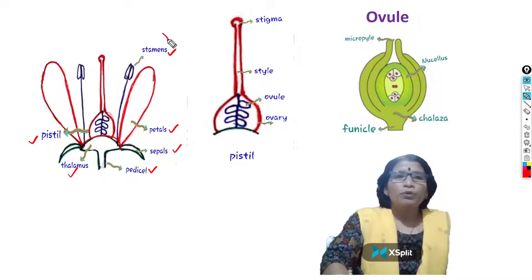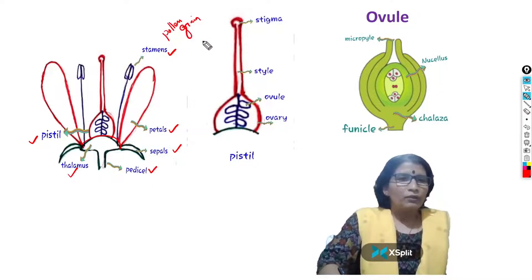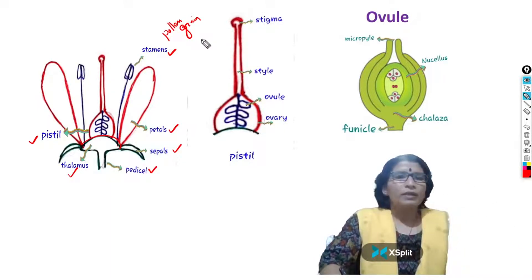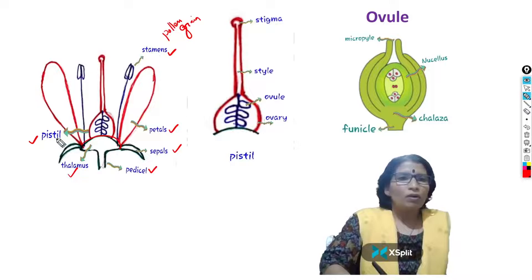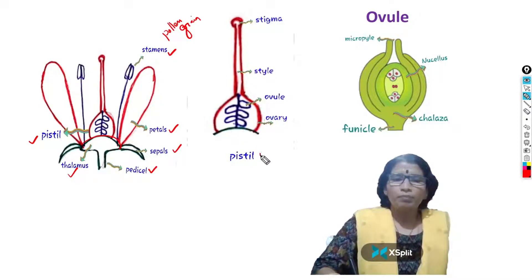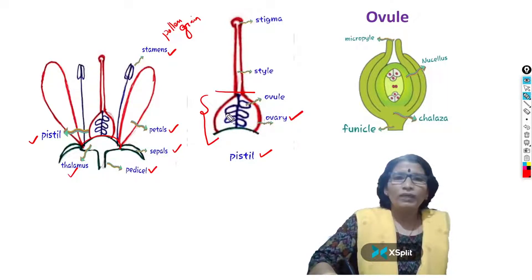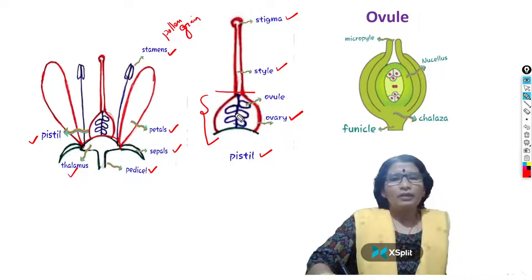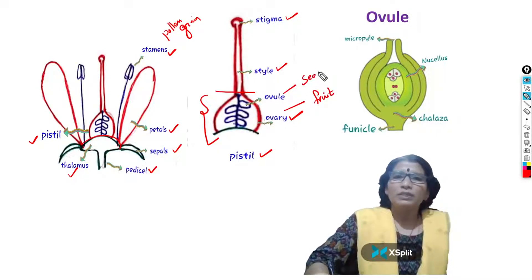Stamens produce pollen grains — the powder-like structure that sticks to your fingers when you touch a flower. Pollen grains are produced by the male sex organ, stamens, while the female sex organ is the pistil. In the pistil, there are three clear parts: the basal large part called the ovary, which contains ovules; the stalk-like structure called the style; and at the tip of the style, the stigma. After pollination and fertilization, the ovary develops into the fruit and the ovules develop into seeds.